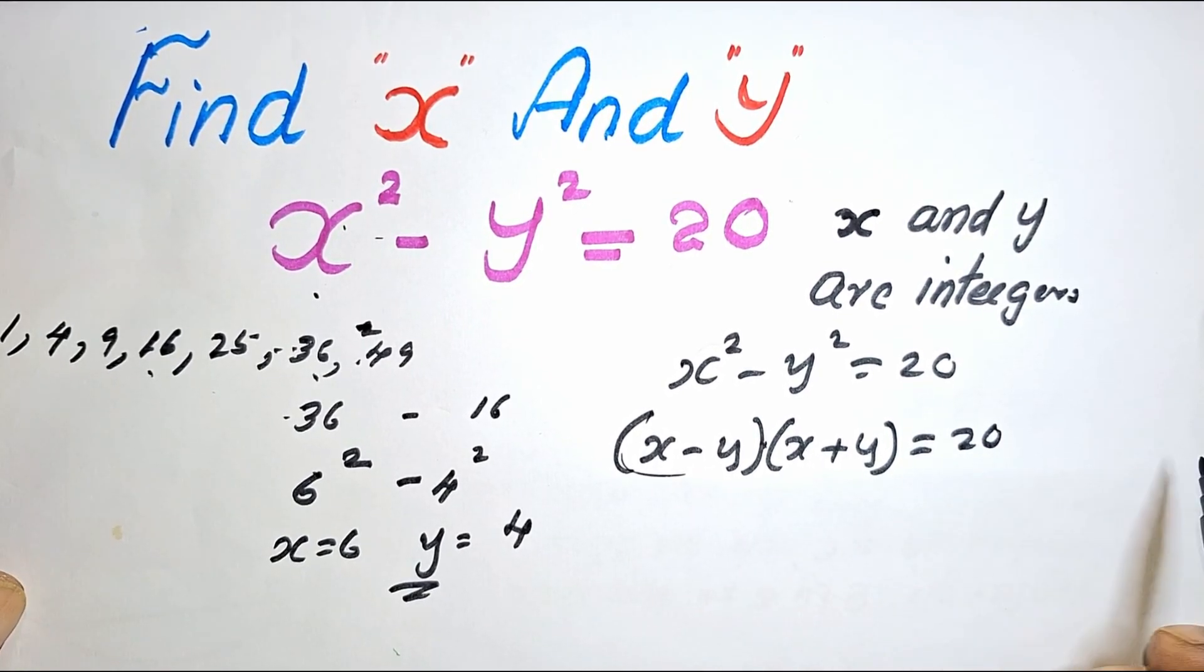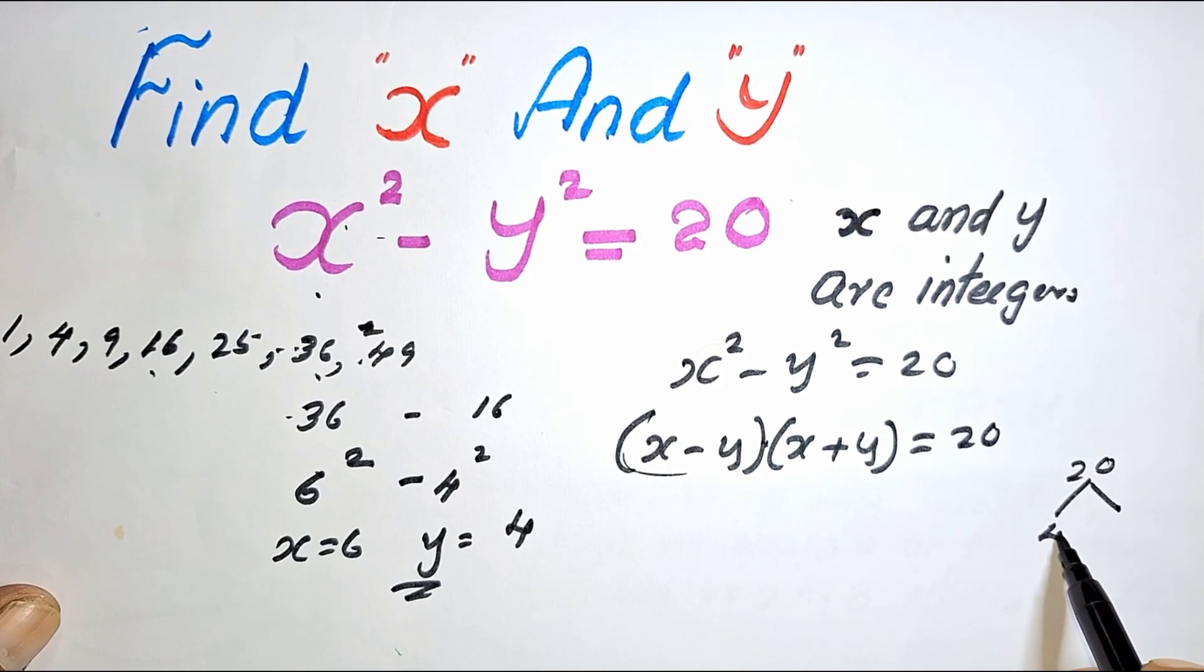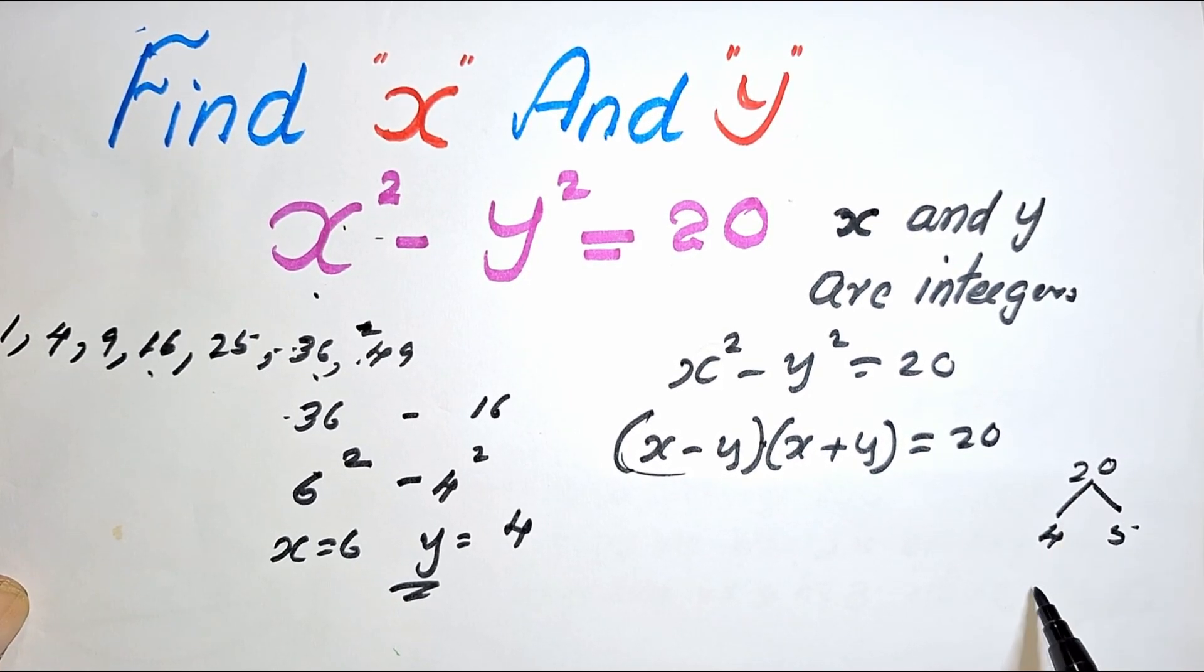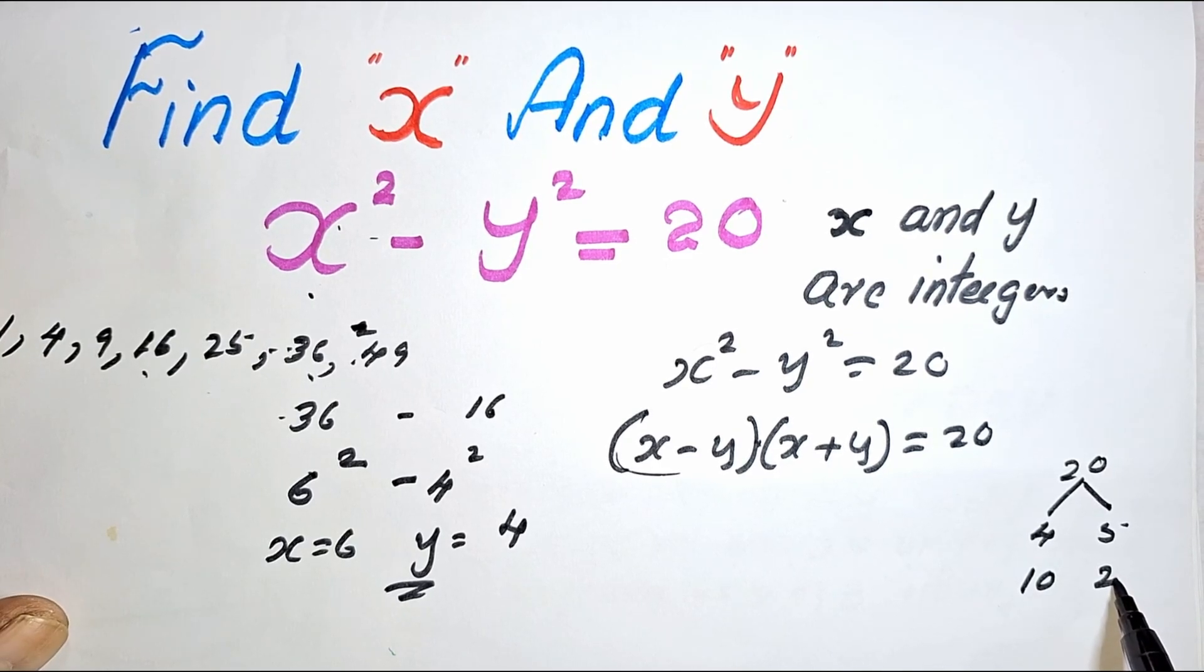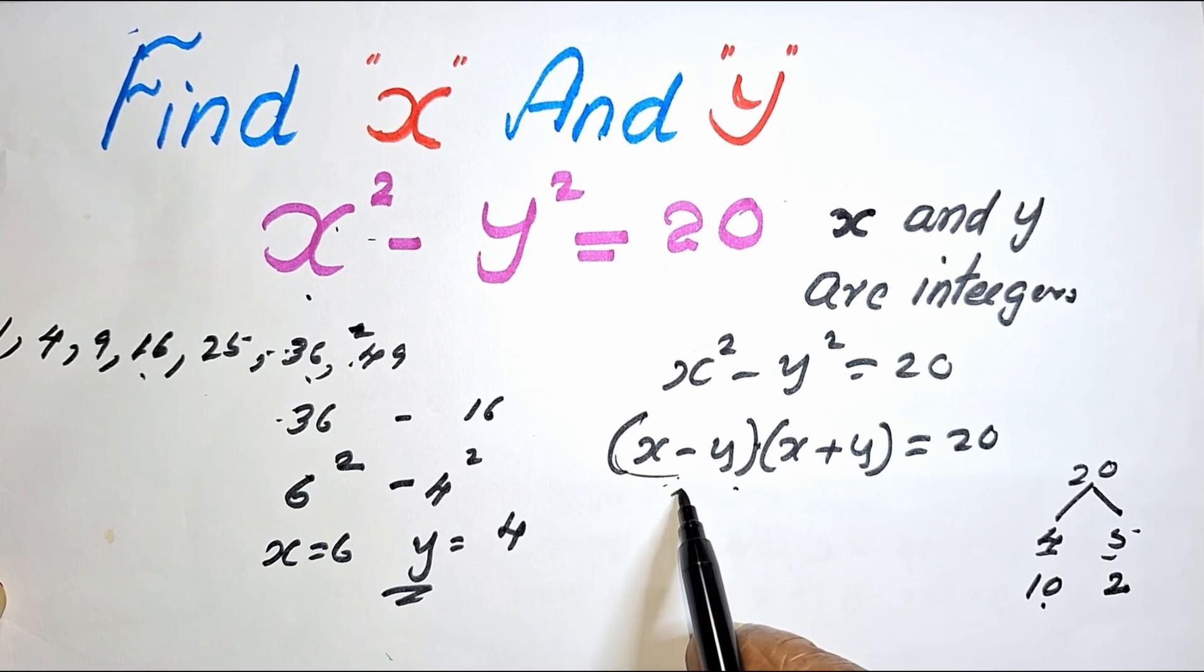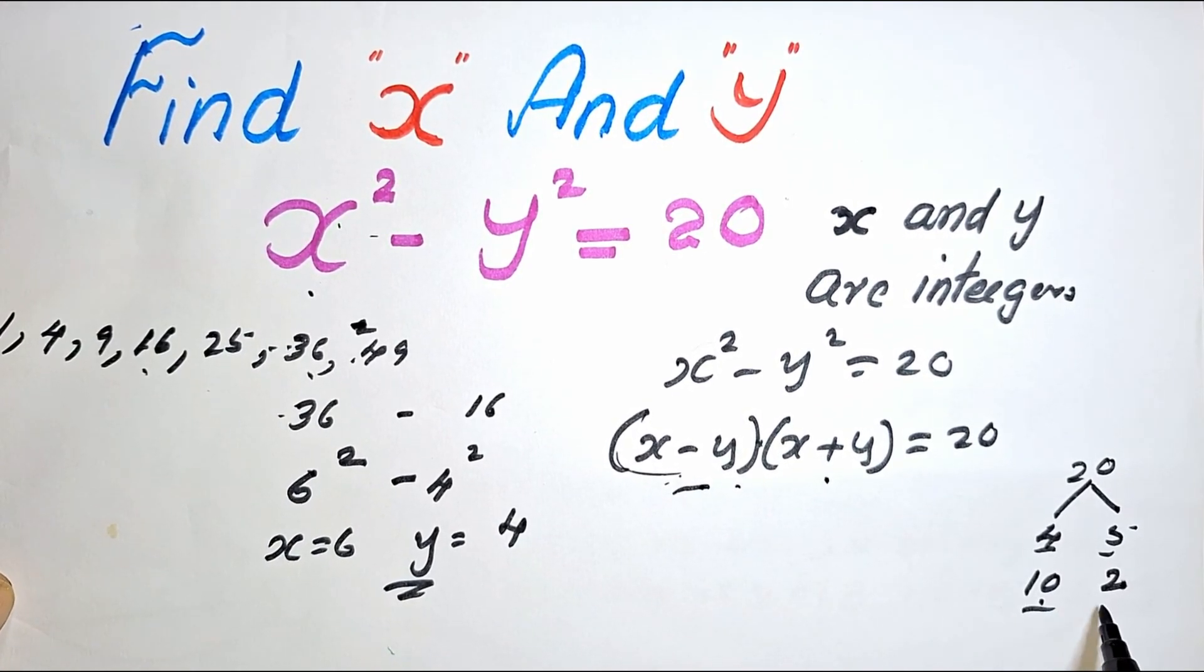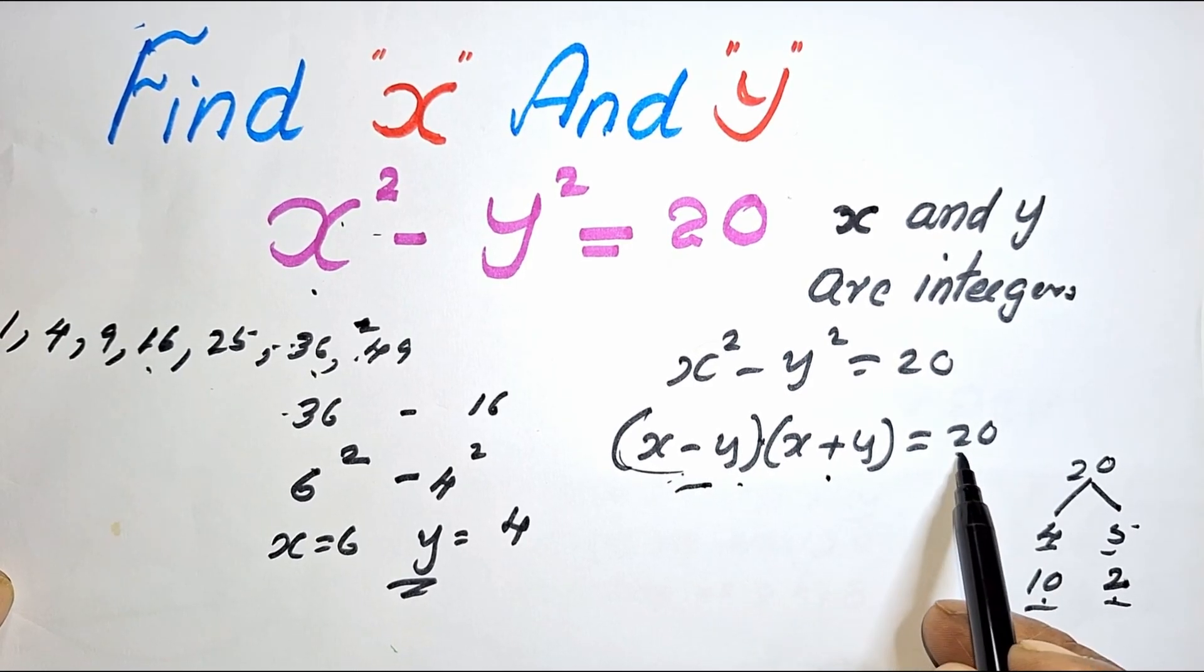Now, 20 we can write as a product of 4 into 5, or we can write as 10 into 2. This won't work here, we can't take this one as 4 and this one as 5, but we can take these two, because 10 into 2 is 20.